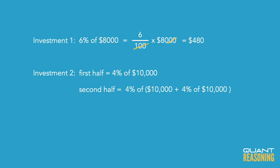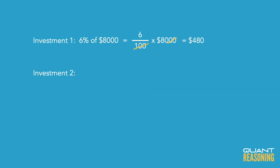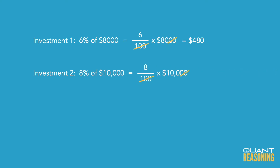Since this is the GMAT, we shouldn't have to do any complicated computations. We should be able to just spot the right answer at a glance. 8% interest on $10,000, if it was just a regular simple annual interest rate that's not being compounded, would be like 8 times 100, so $800.